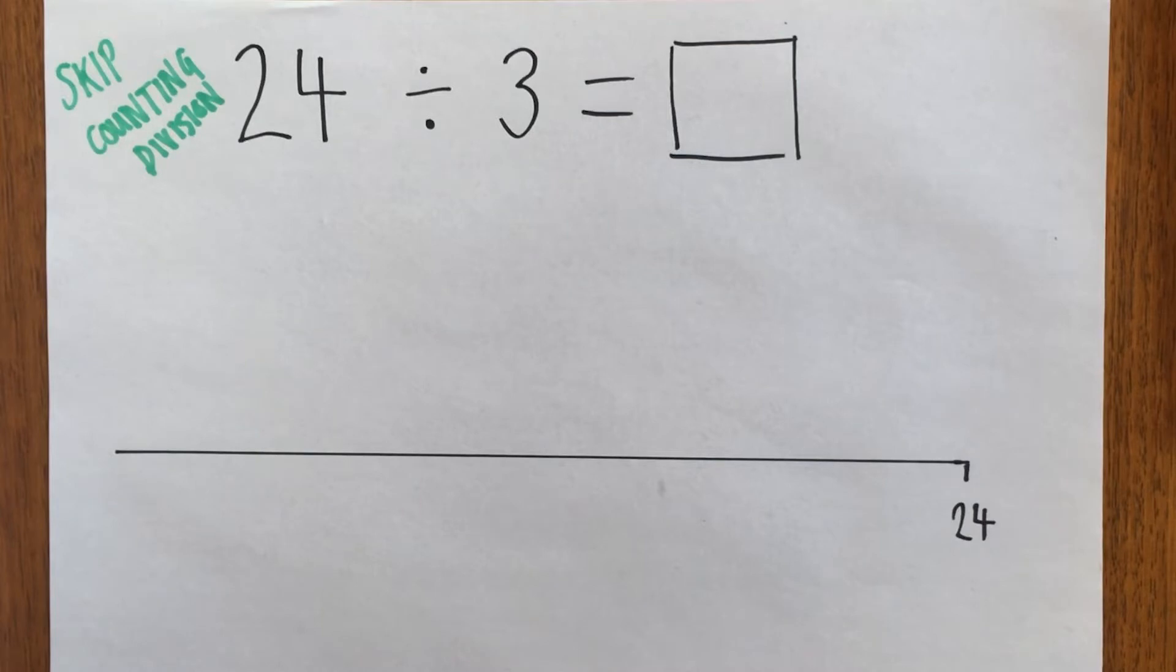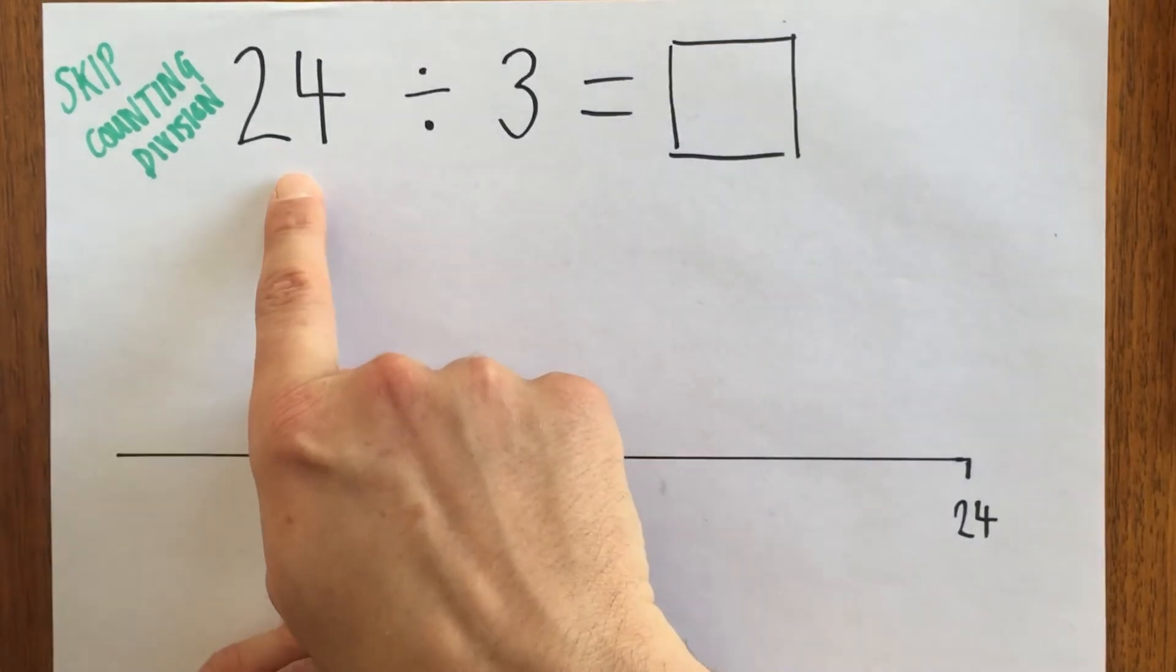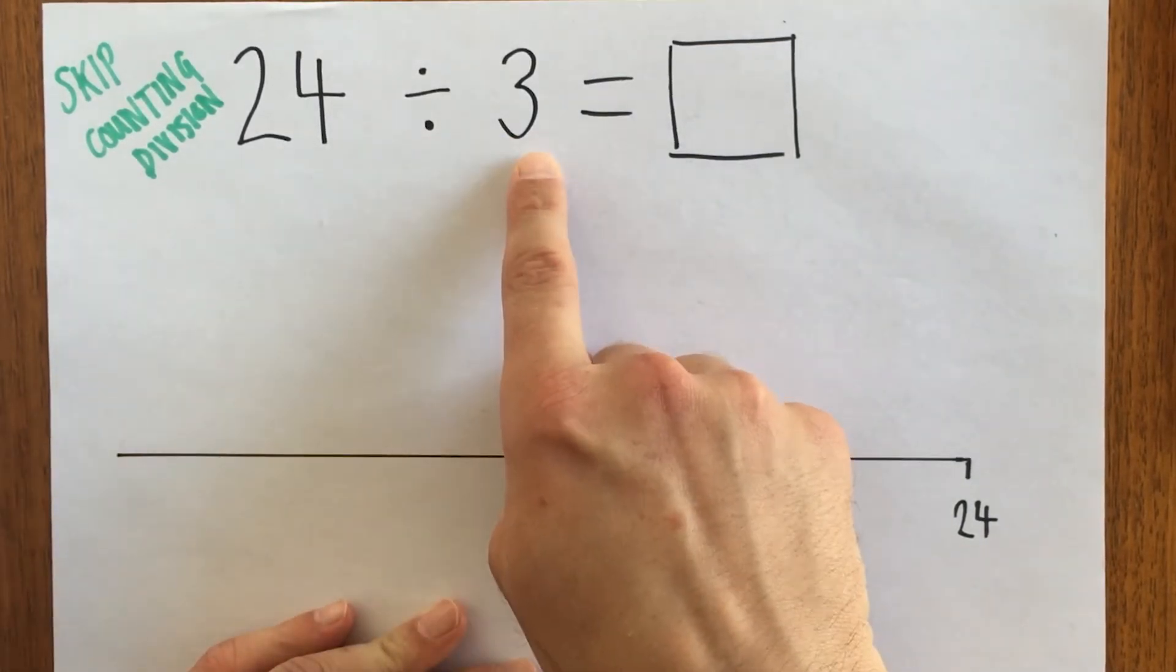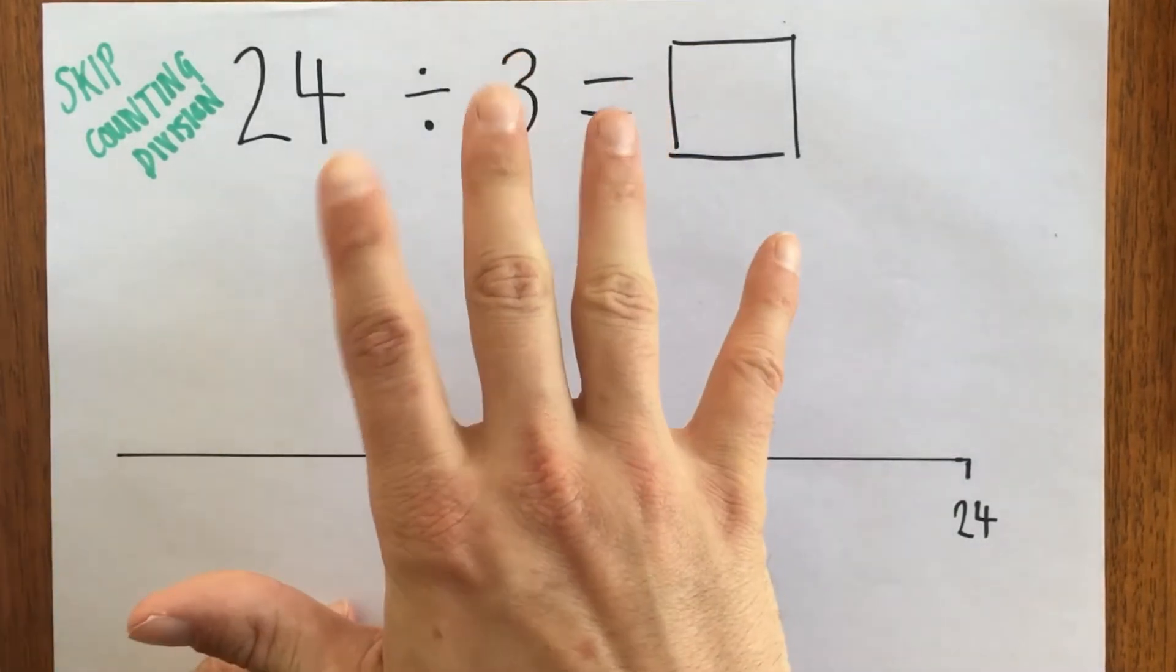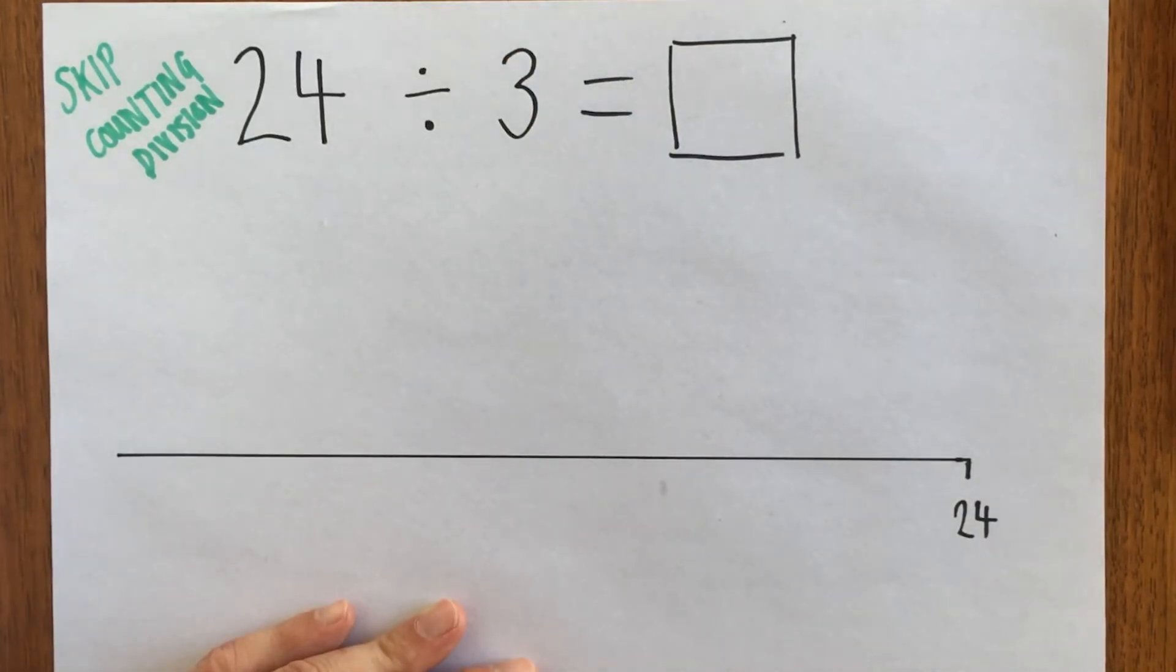We're going to do some skip counting. I've written the equation up the top, which is 24 divided by 3, and we're going to find out the answer. Down the bottom I've drawn a number line. Some people may want to use the number line, others may just want to count on their fingers. Either is okay, but you do need a way to track your work.